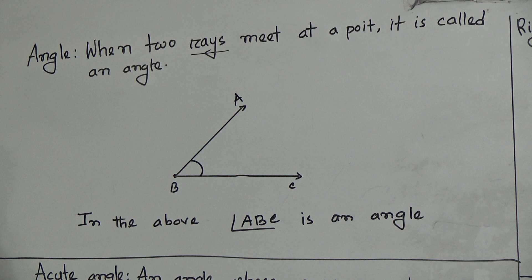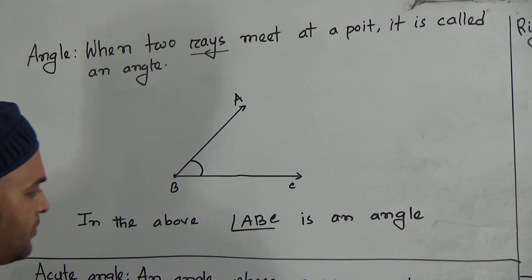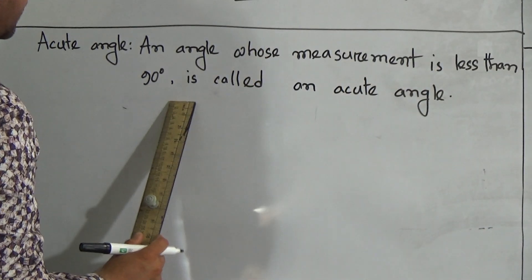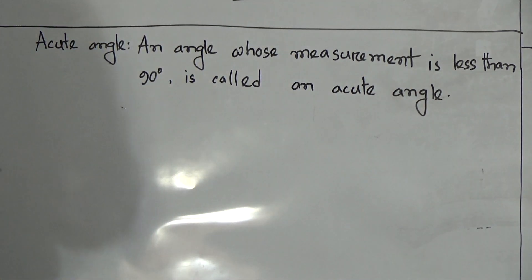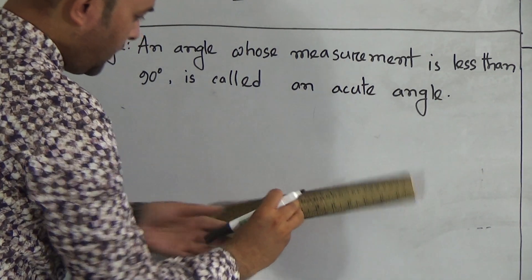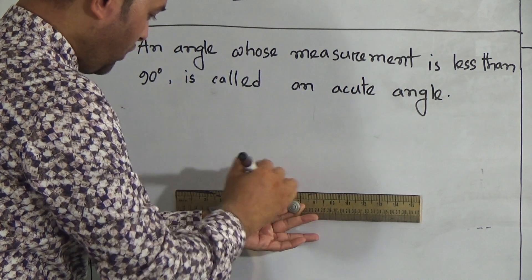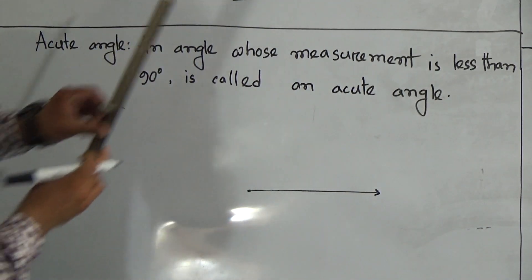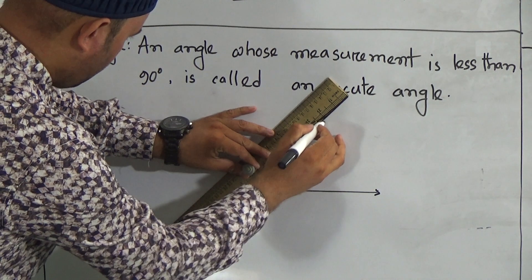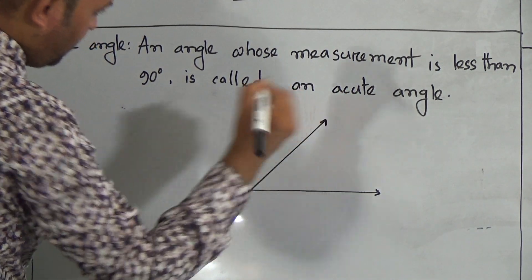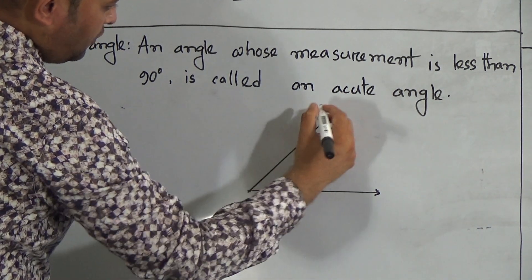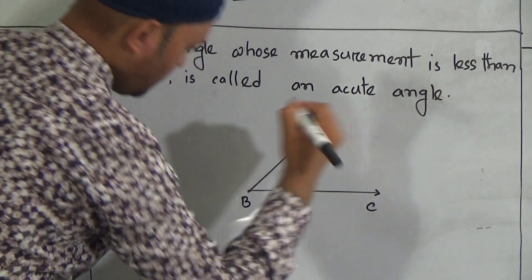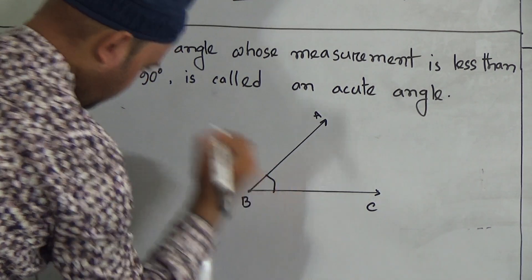Now go to the next one, which is acute angle. An angle whose measurement is less than 90 degrees is called an acute angle. So here you can draw an acute angle this way. Draw a ray — here is a point, there is no definite length — and then draw another ray this way.